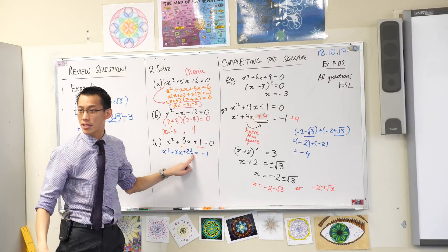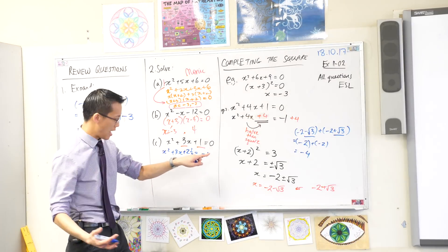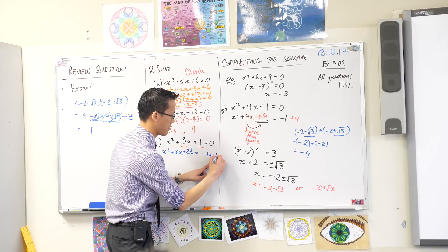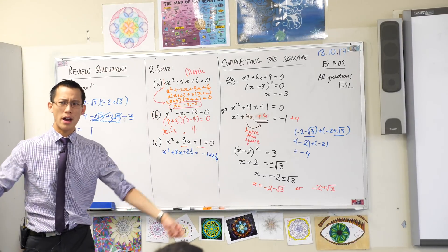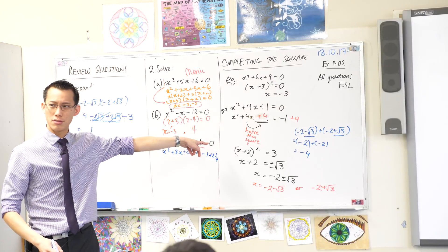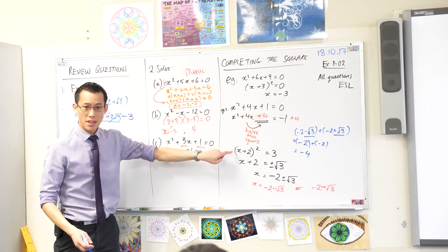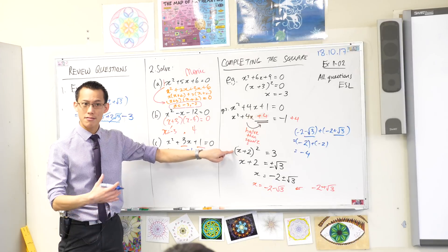So 2.25. I added it to the left, so I better do it on the other side. So far, so good. Why did I do that? Why did I add this strange, awkward number? What did it allow me to do? I've now made a square.